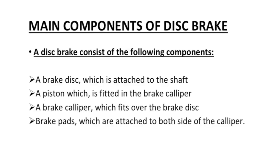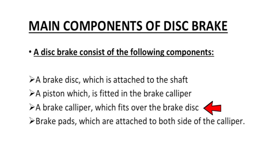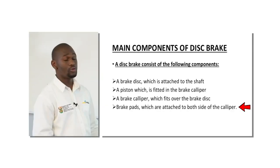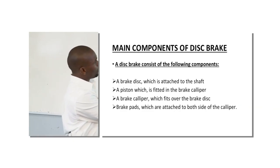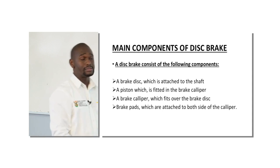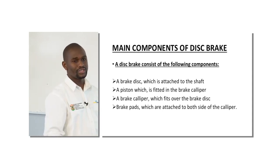Main components of a disc brake: number one, a brake disc that is attached to the shaft. Number two, pistons which are fitted in the brake calipers. It also consists of a brake caliper, which fits over the brake disc, and brake pads that are attached on both sides of the caliper. These are the main components of the disc brake.